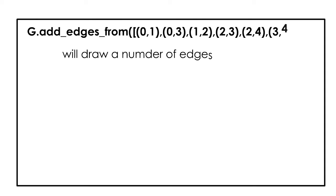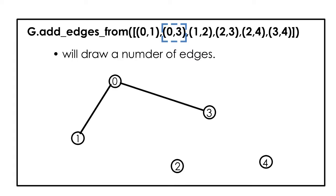G dot add underscore edges underscore from. We'll draw edges from 0 to 1, 0 to 3, 1 to 2, 2 to 3, 2 to 4, and lastly 3 to 4.